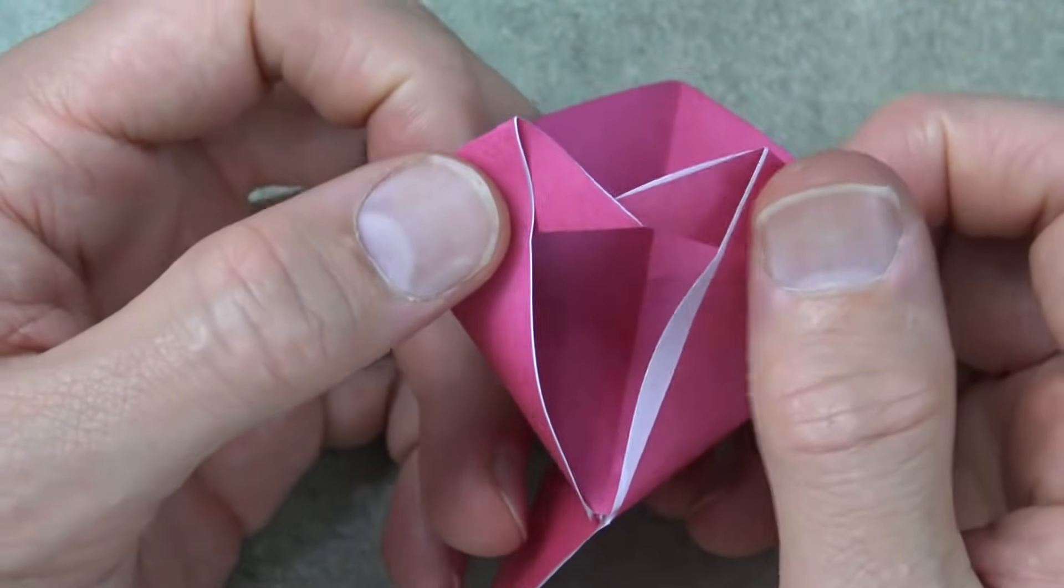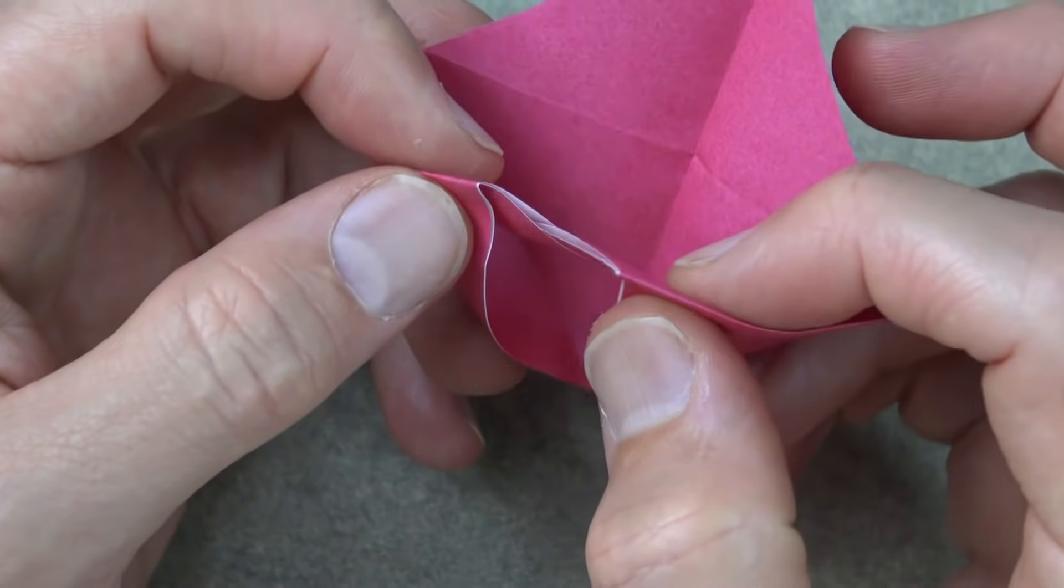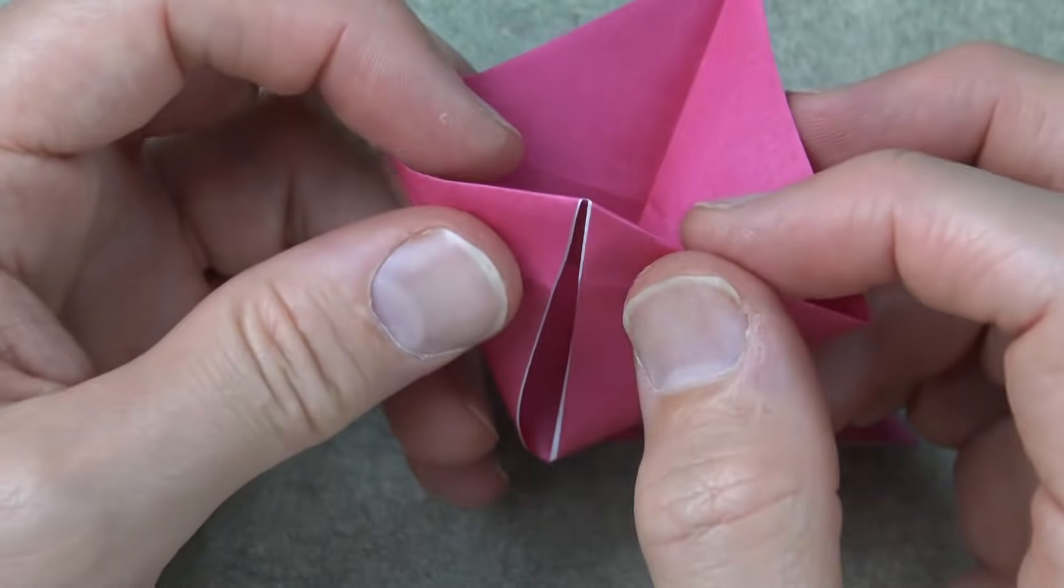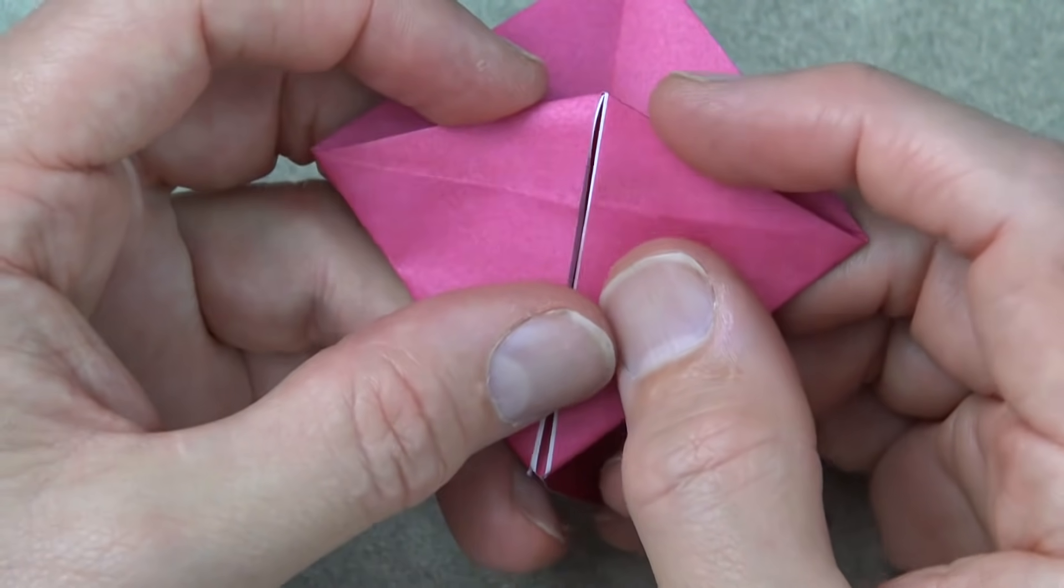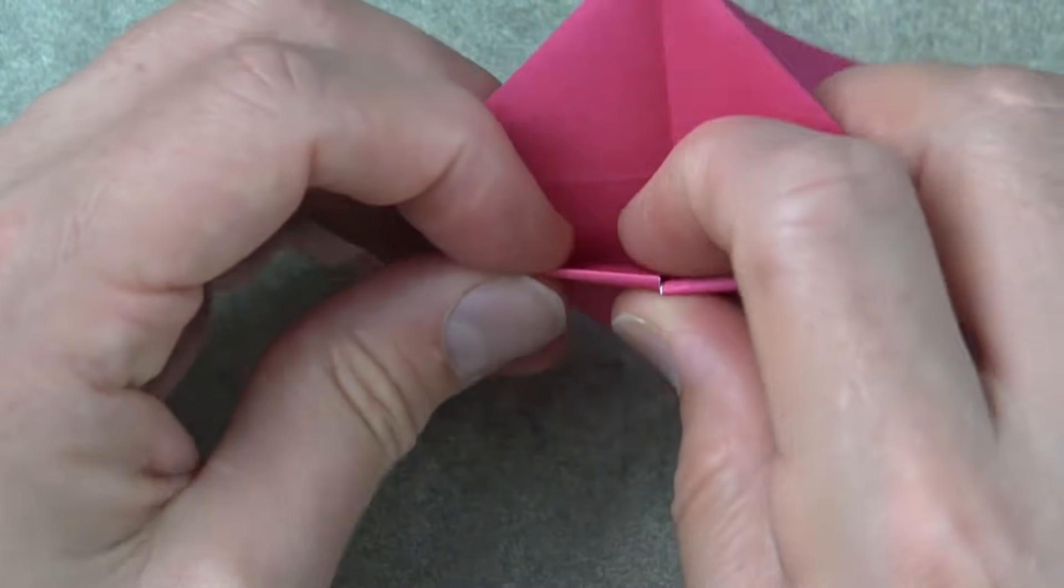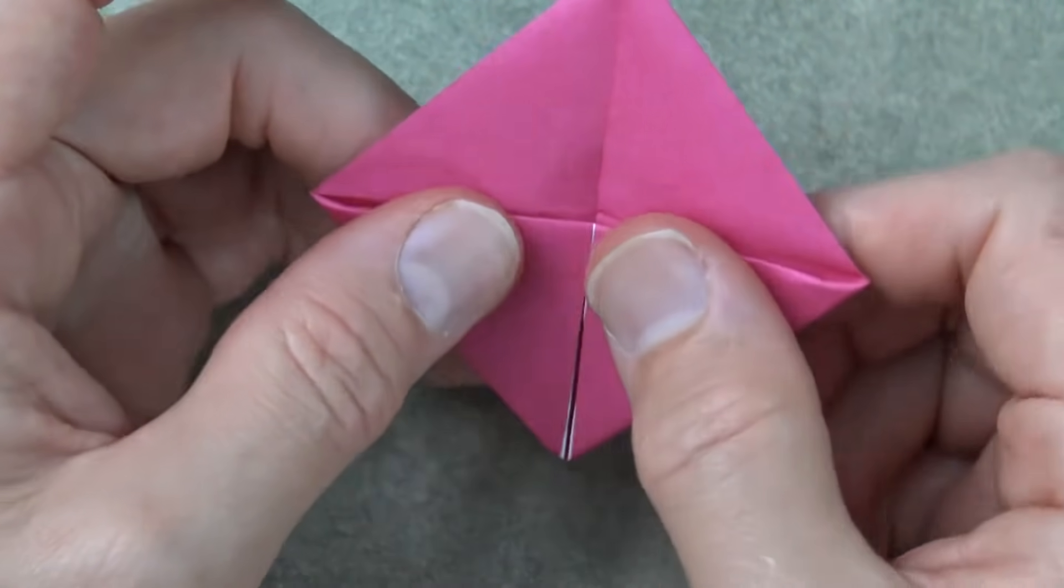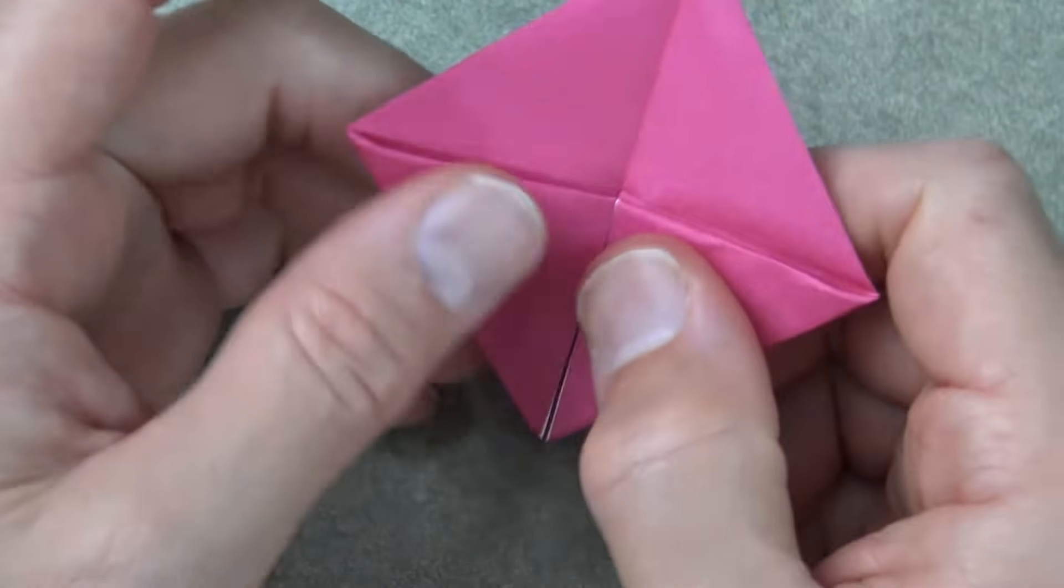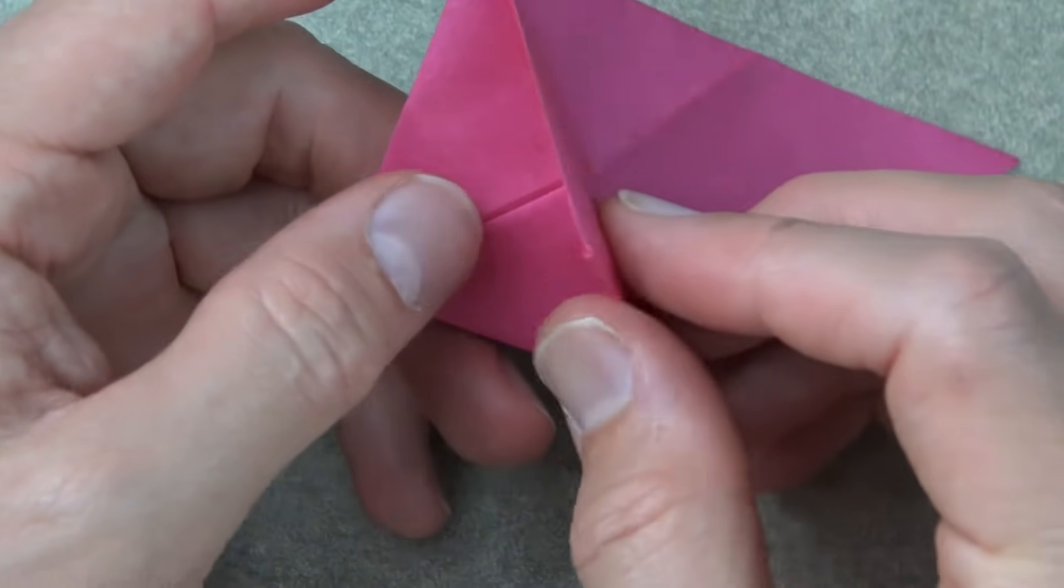You see we have these two bird beaks. Slide one beak inside the other and make sure that they go all the way. Now fold this flap inside the pocket. Like that. And close these flaps.